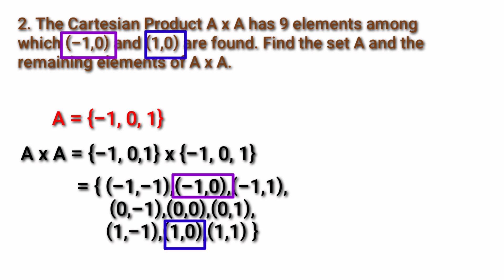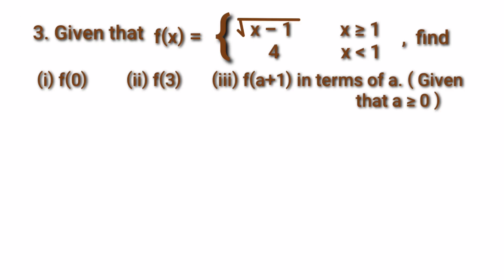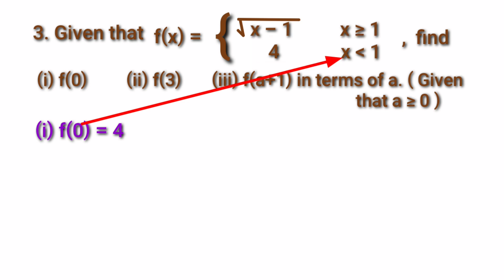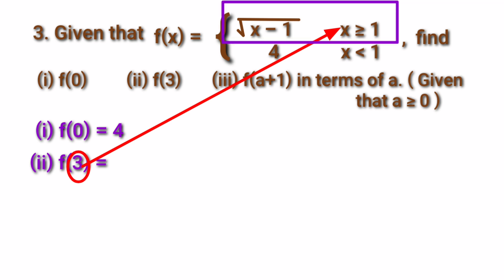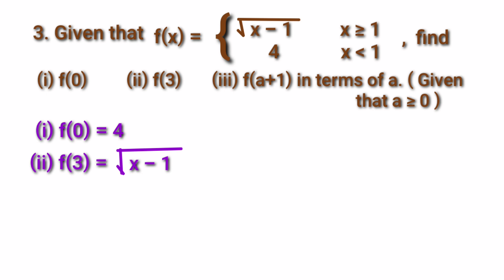Third sum: f(x) = √(x-1) for x ≥ 1, and f(x) = 4 for x < 1. Find f(0), f(3), and f(a+1) given a ≥ 0. For f(0): since 0 < 1, we use the value 4, so f(0) = 4. For f(3): since 3 ≥ 1, we use √(x-1), giving √(3-1) = √2.